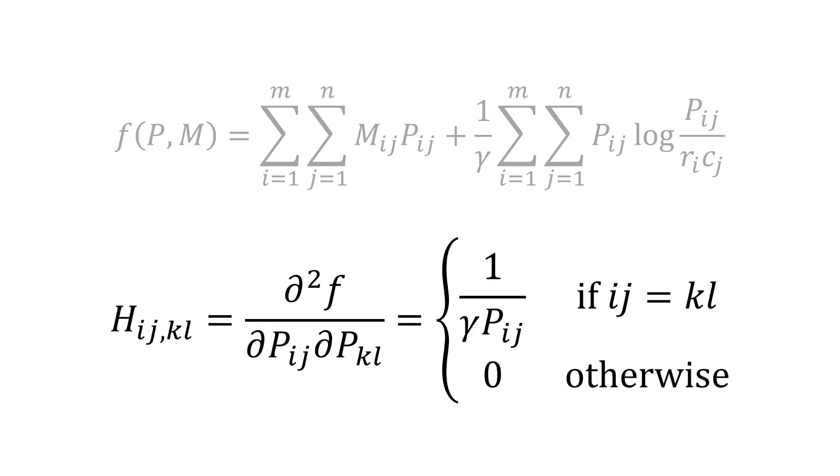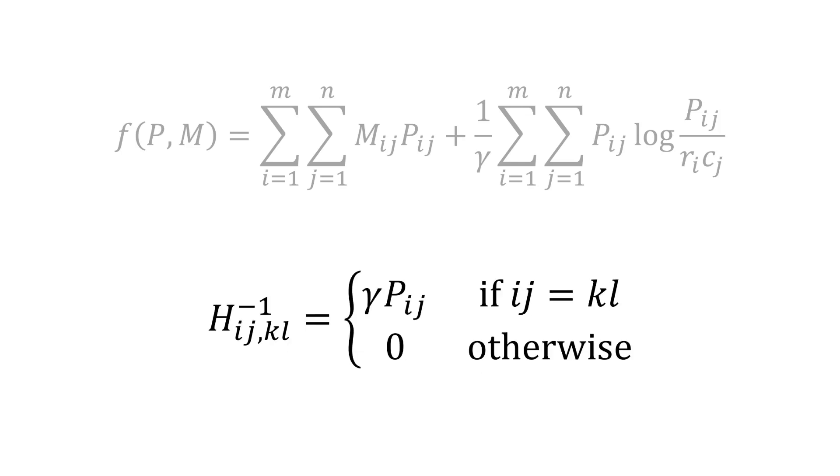Moving on to H. The ij,kl-th entry of H is the second derivative of the objective function with respect to p_ij and p_kl. Since the objective decomposes over the entries of p, the resulting matrix H is diagonal, with diagonal entries 1 over gamma times p_ij. The inverse is therefore trivial to compute.